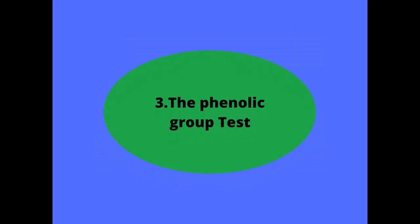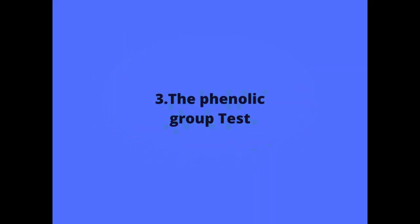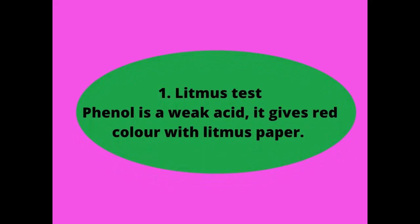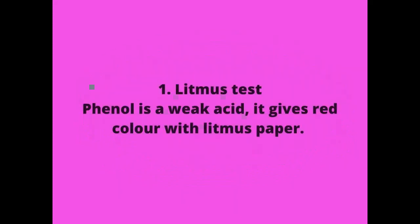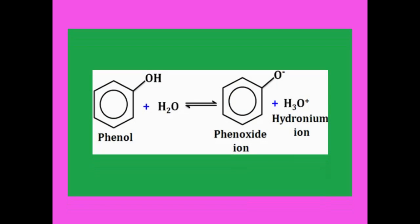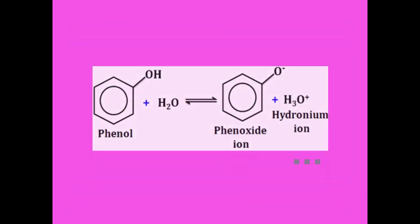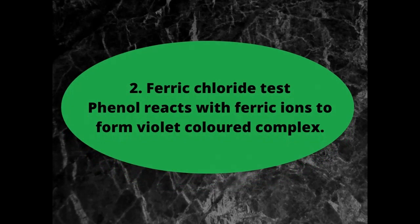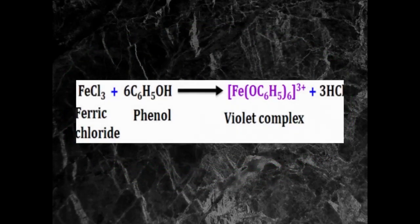The phenolic functional group can be tested using a simple litmus test — when litmus paper is added to phenol, it turns red. A second test is the ferric chloride test, which can be conducted with phenol; it gives a violet complex, confirming the phenolic group.